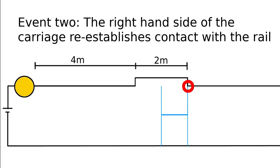Event 2 is when the right hand side of the carriage reconnects with the track after passing the gap. It sends a signal to the bulb that the reconnection has occurred. Again, the maximum speed this can propagate is c, and this time it must propagate 6 meters, as it must also cross the 2 meter gap.